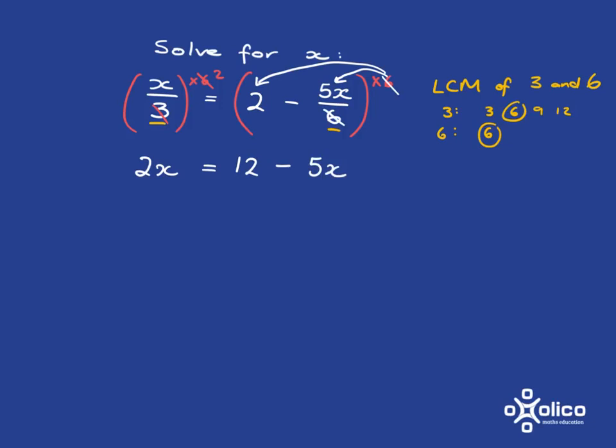Now that we've got rid of our fractions, we've got a very simple, sweet, normal equation. So, we want to get all the x's on the left and all the numbers on the other side. So, we want to get this 5x away from here, so we are going to add 5x onto this side, so then we must add it onto that side,